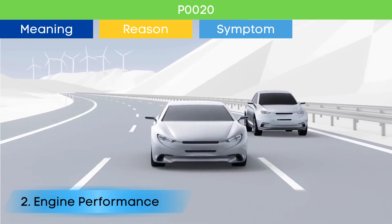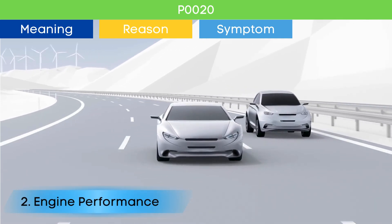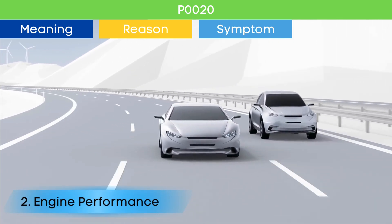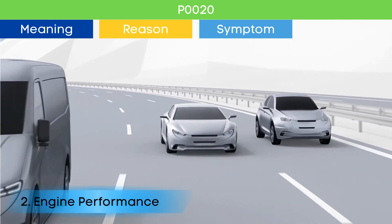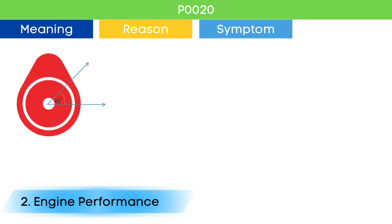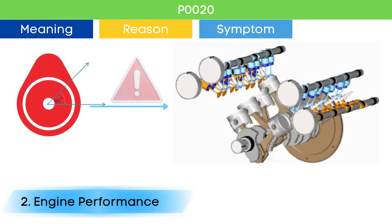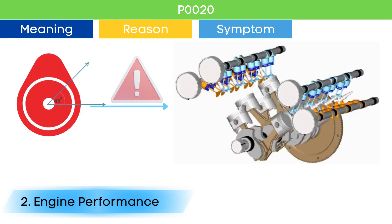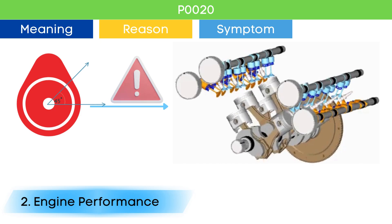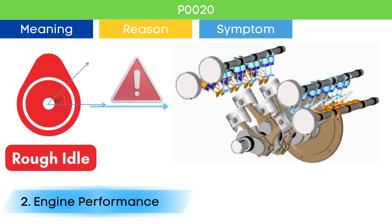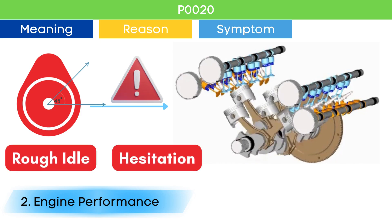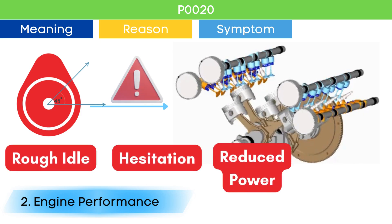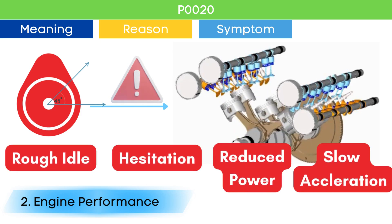Symptom number two: poor engine performance. Problems in the cam position actuator circuit can lead to incorrect cylinder valves opening and closing. This can manifest as rough idle, hesitation, reduced power, and sluggish acceleration.